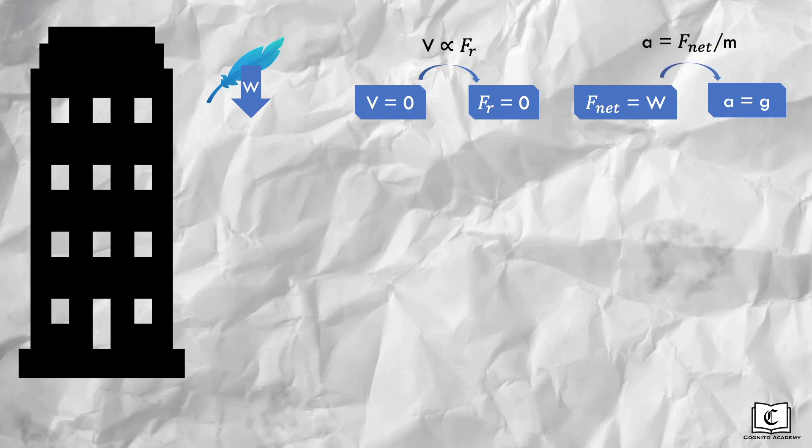The feather gains velocity. But the higher its velocity, the higher the air resistance. And we can see that the net force on the feather is actually decreasing due to this increasing air resistance. This results in a smaller acceleration, since acceleration is directly proportional to net force.